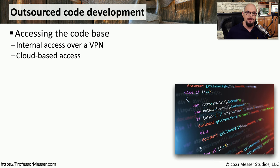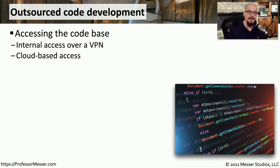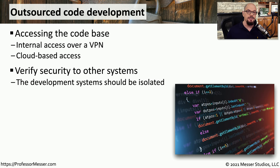Not every organization has the resources available to do their own in-house development, so you often have to go outside to a third party to have programming services done for you. In those cases, you need to make sure that you're building a secure environment for the developers to work in and for you to be able to evaluate the code that's being created. You have to decide where the code itself will be stored — you may provide the developers with a VPN connection to the data in-house, or you may have the data stored on a centralized cloud-based server. In both situations, you need the correct security controls for where the data is and how people are accessing it, and where developers work should be isolated and secure from the rest of the network.